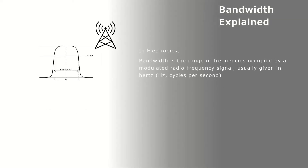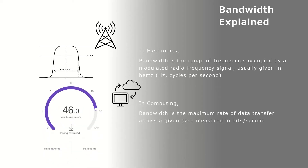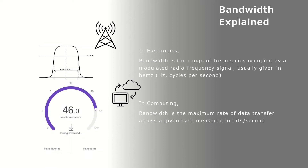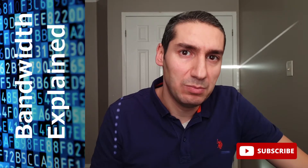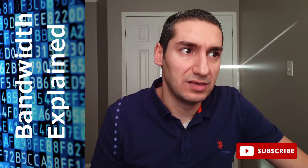In electronics, bandwidth is a range of frequency occupied by a radio frequency signal, usually measured in hertz or cycles per second. While in computing, bandwidth is the maximum rate of data transfer across a given path, in bits per second. Let's take some examples to clarify this, starting with the electronics part.